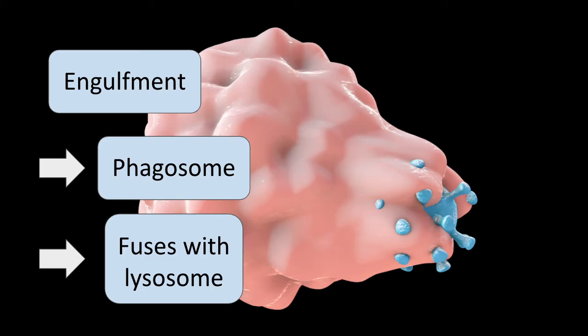After a particle is bound to phagocyte receptors, extensions of the cytoplasm called pseudopods will flow around it and engulf it, and then the plasma membrane pinches off to form a vesicle called a phagosome that will fully enclose that particle within the white blood cell. That phagosome can then move into the cell and fuse with a lysosomal granule, resulting in the discharge of the granule contents into this phagolysosome.